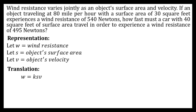W, the wind resistance, is equal to the constant of variation times the surface area times the velocity. Having our equation, we can now move on to our solution. Since we're given a set of values — 80 miles per hour for velocity, 30 square feet for surface area, and 540 newtons for wind resistance — we can get the constant of variation.